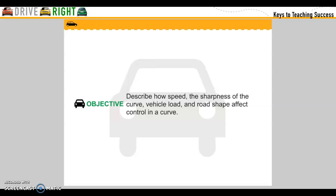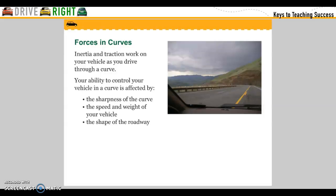Objective: Describe how speed, the sharpness of a curve, vehicle load, and road surface affect controlling a vehicle in a curve. Inertia and traction work on your vehicle as you drive through a curve. Your ability to control your vehicle in a curve is affected by the sharpness of the curve, the speed and weight of your vehicle, and the shape of the roadway.